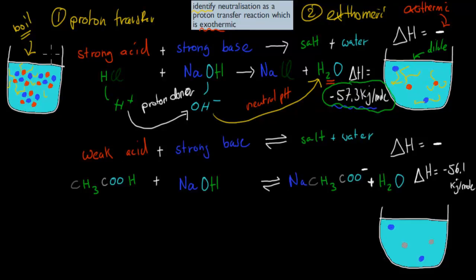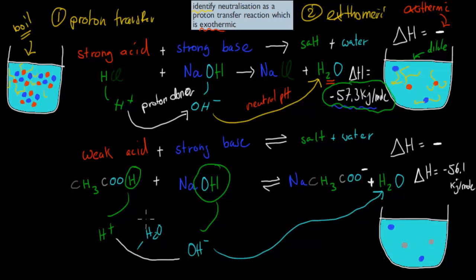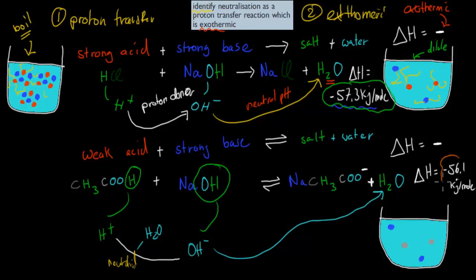Whereas if we have a weak acid and a strong base, the same reaction happens — it's still a transfer of proton. We have the hydrogen from the acid and the hydroxide group from the base come together and form H₂O, which we can find in the actual products. So here we have it neutralized — we have very few hydrogen or hydroxide ions remaining, because it's going to be a reversible reaction. But overall, most of it has been neutralized. It still releases energy, but a tiny bit less: minus 56.1 kilojoules per mole, as opposed to minus 57.3.